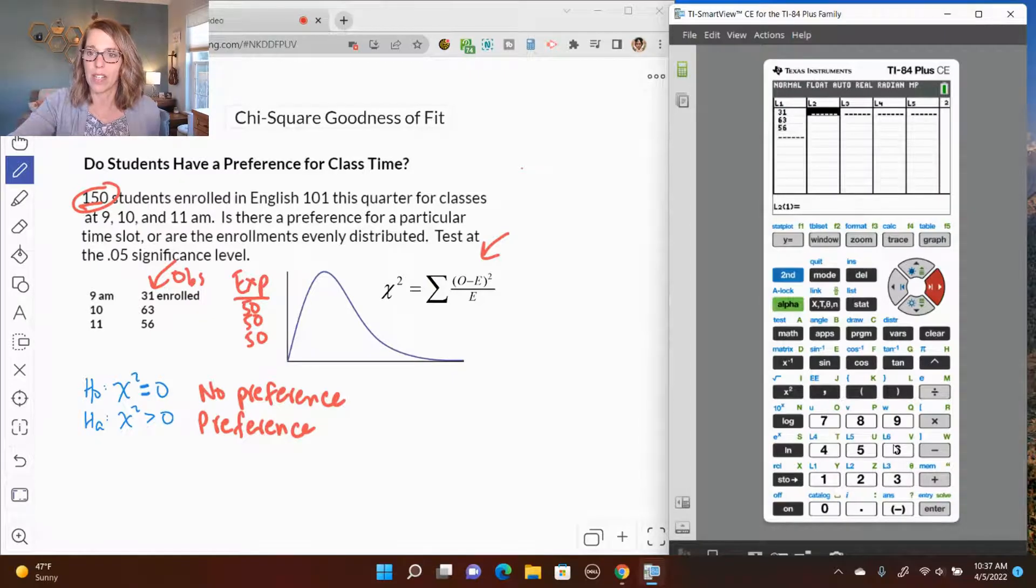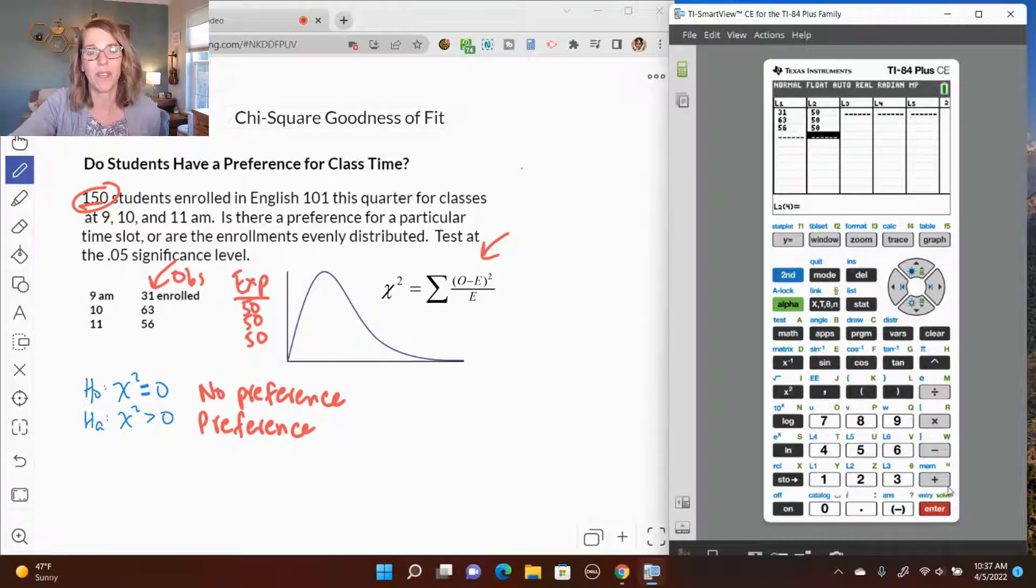I'm going to arrow over until I'm in L2 there, and then I've got 50, 50, and I'm just hitting Enter after each of these. 50, 50, and 50.